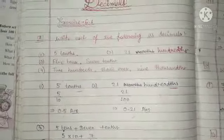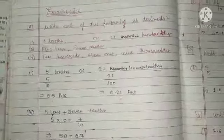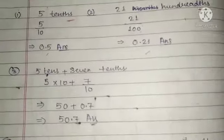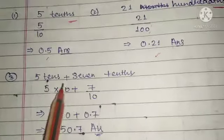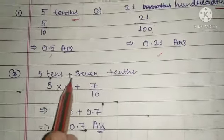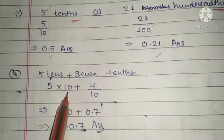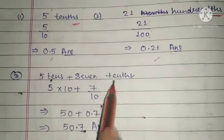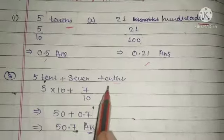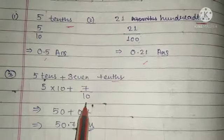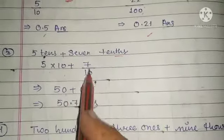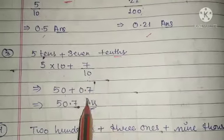So divide it and our answer will be 0.21. Question number three is 5 tenths plus 7 tenths. Where 'ths' appears we divide. 5 tenths is 0.5 — we divide by 10. Then we have 7 tenths, divide by 10 to get 0.7.